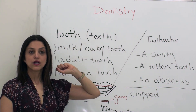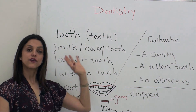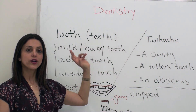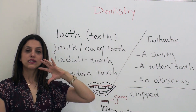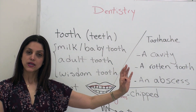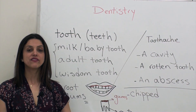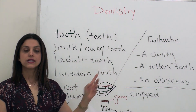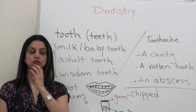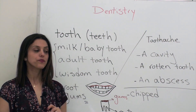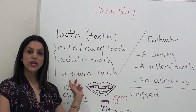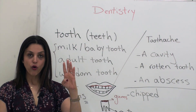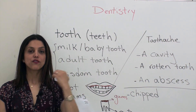So you have tooth in your mouth. If you're a baby or a kid, they have 'milk tooth' or 'baby tooth.' You will lose them, and then you will have 'adult tooth' — these are permanent. And 'wisdom teeth' — we usually have four, and they are at the very back of your mouth. Sometimes they cause problems.